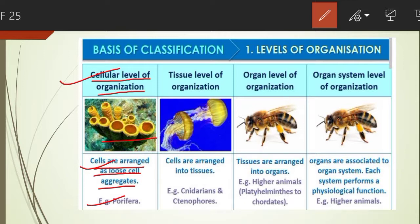The second level is tissue level of organization. Cells performing the same function are arranged into tissues — hence it is called tissue level of organization. In cnidarians, the arrangement of cells is more complex. Examples: Cnidarians and Ctenophores.